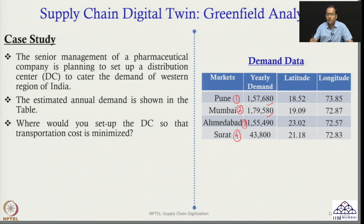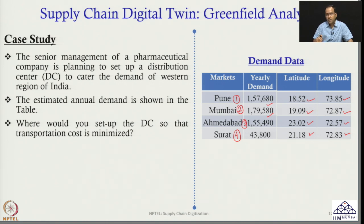I am providing the latitude and longitude of the customer locations. Pune: latitude 18.52, longitude 73.85. Mumbai: latitude 19.09, longitude 72.87. Ahmedabad: latitude 23.02, longitude 72.57. Surat: latitude 21.18, longitude 72.83. So now you not only know the demand at each of these four markets, but also the exact latitude and longitude.